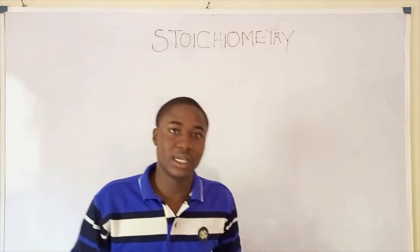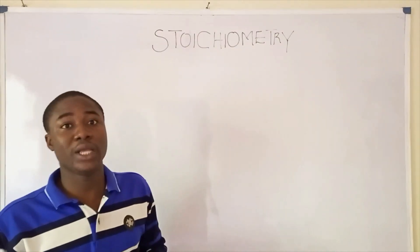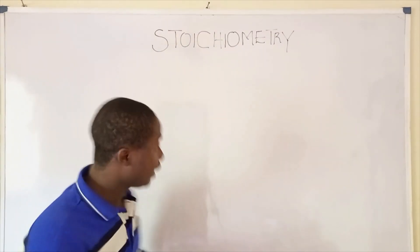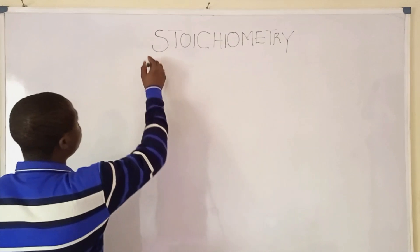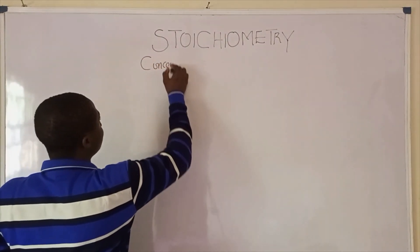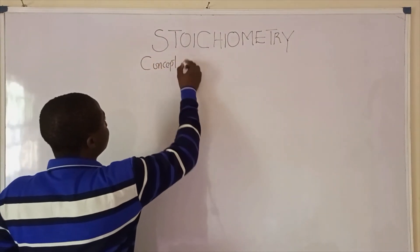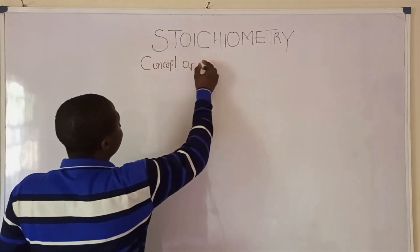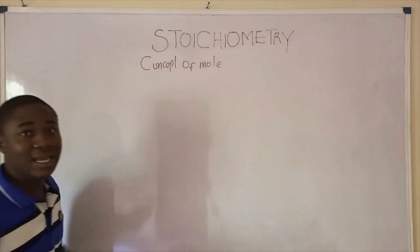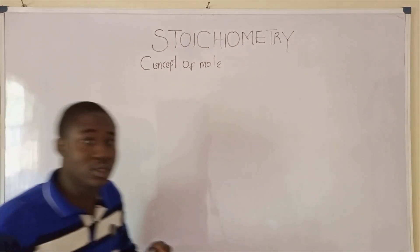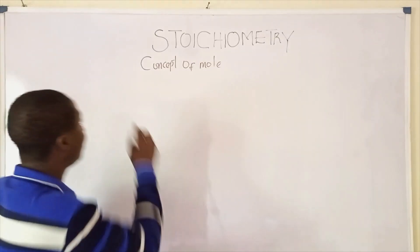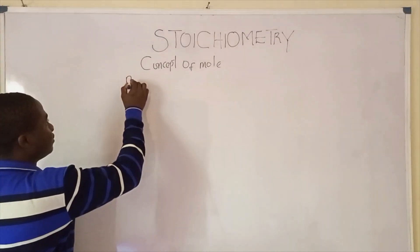First thing first, talking about stoichiometry: it has to do with the concept of mole. This mole is basically denoted with the symbol n.